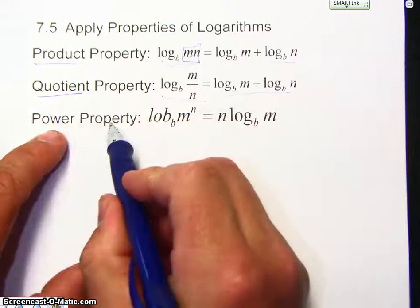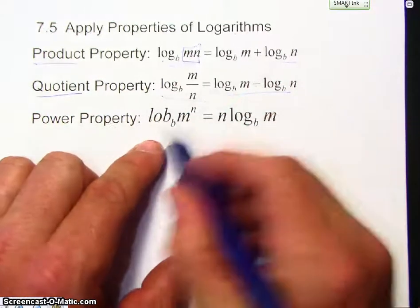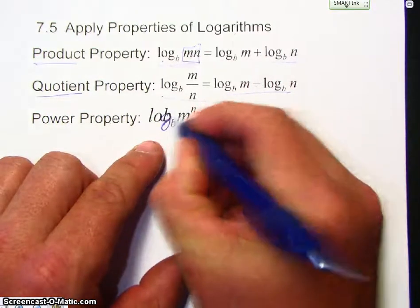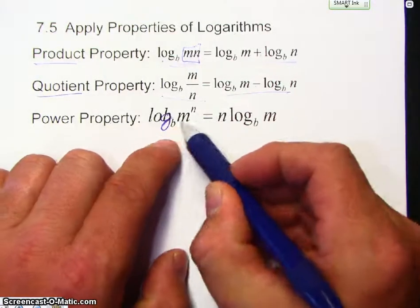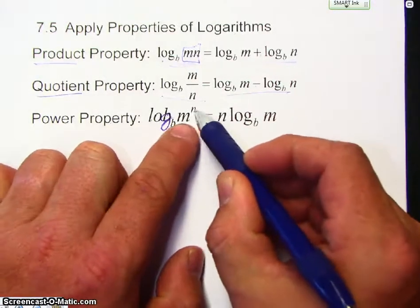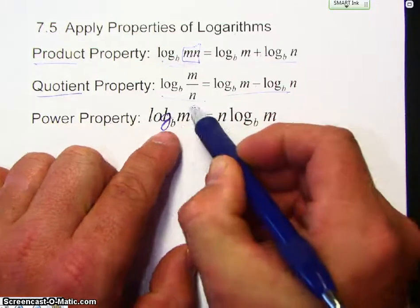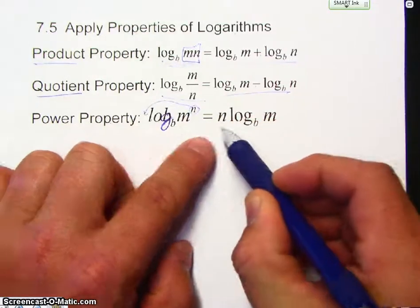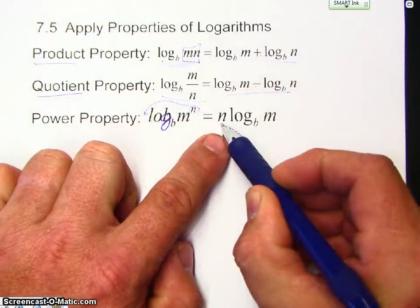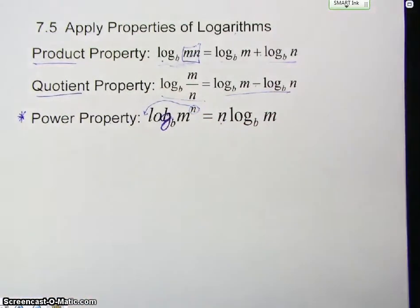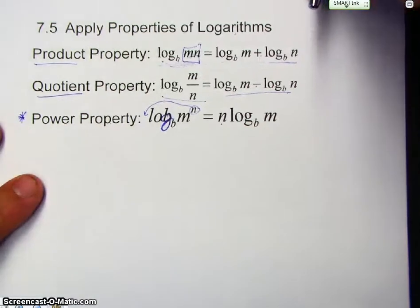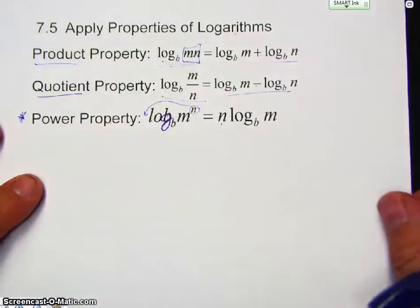Power property, all it means is, this should be a log, L-O-G, not lob. Now, so right here, if I have X put it here, that means I can bring it down and becomes the coefficient. This is a very powerful property, particularly when we begin solving equations. All right, so these are the three properties that we're going to be using.